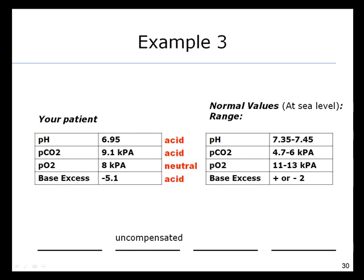So remembering that this patient has an acid pH, an acid CO2, the O2 as always is neutral, and the base excess is acid. And we know that this patient, because both the CO2 and the base excess have acid effects, are uncompensated. Since this is uncompensated, we can skip the step as to whether or not it's partially or fully compensated, because it isn't compensated at all. The next question is whether this is acidosis or alkalosis. Well, here we can plainly see that the pH is well into the acid range. So this is acidosis.